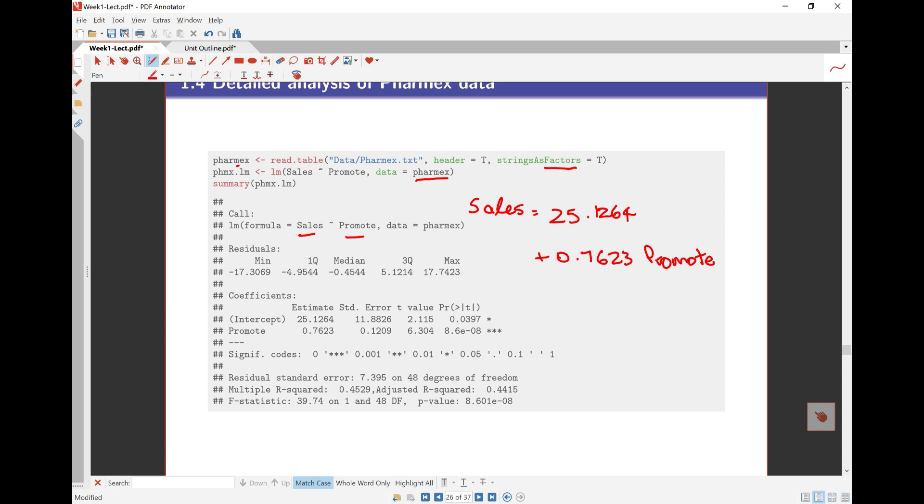Now this is my fitted equation. Sales isn't exactly equal to this particular equation because I've got some random variation around that. So you usually put a hat over there saying this is fitted values or this is the values my equation tells me from the model.